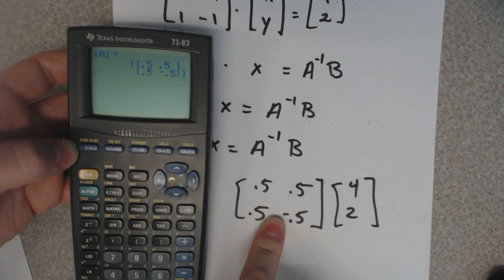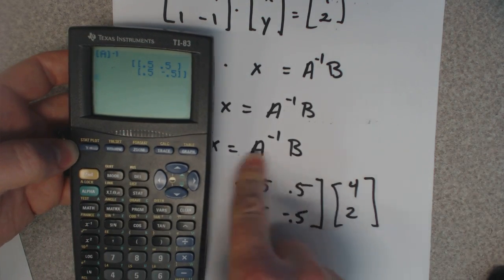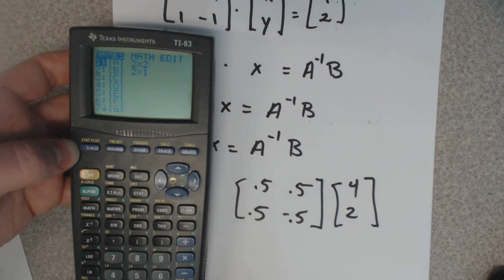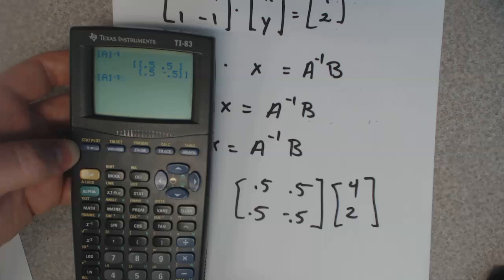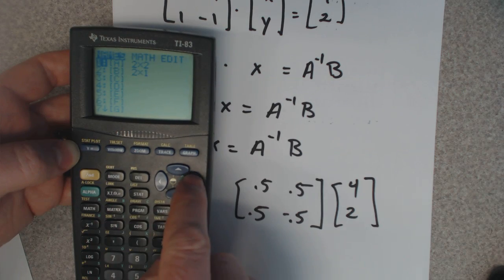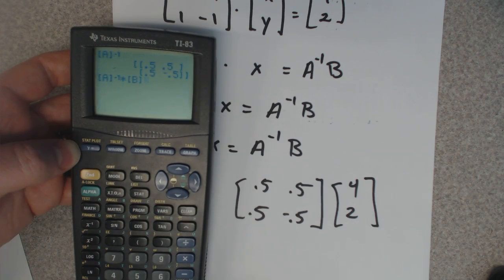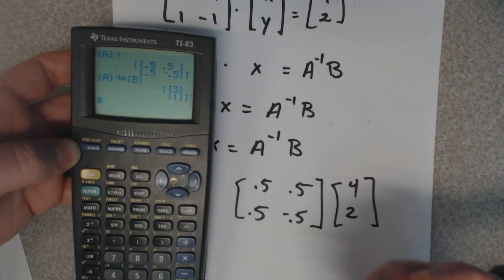I'm going to put in matrix A inverse times B. A inverse times matrix B. There's my matrix, my answer matrix.